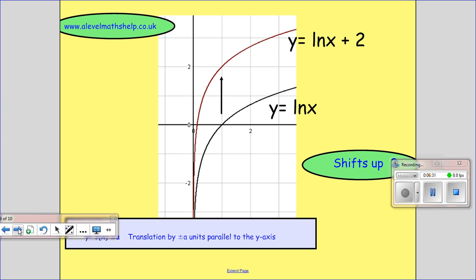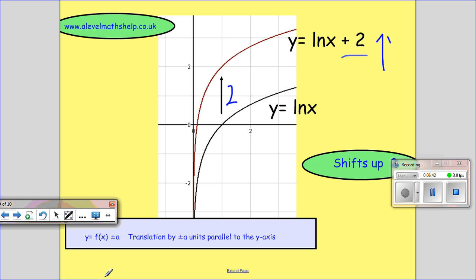OK, and then we've got y equals ln x plus 2. And that just will lift it up 2 because it's outside the function. So we've got y equals plus a and it's translation by a units parallel to the y-axis. So it just goes up plus 2.